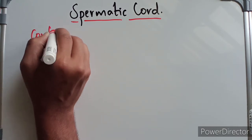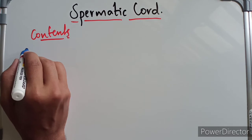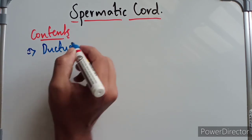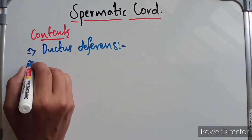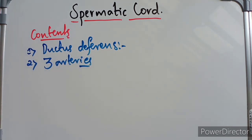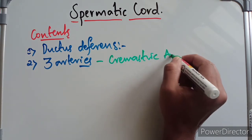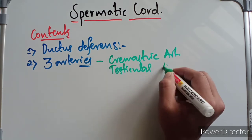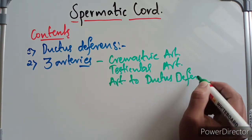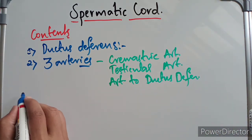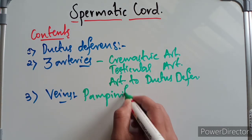The spermatic cord consists of the following six groups of structures. The first is the ductus deferens, which lies in the posterior part of the spermatic cord. Then we have three arteries: the cremasteric artery, the testicular artery, and the artery to the ductus deferens. Then we have the veins, which form the pampiniform plexus of veins.